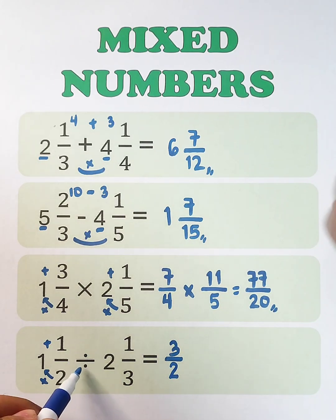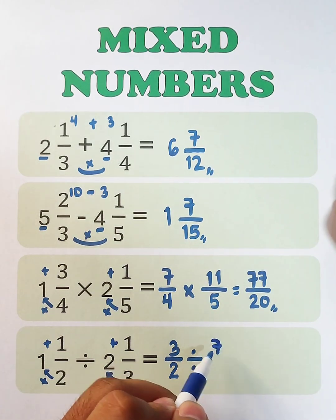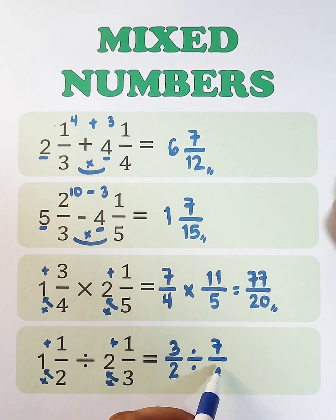Next, 3 times 2, which is 6, plus 1, that is 7. Then copy your denominator, which is 3.